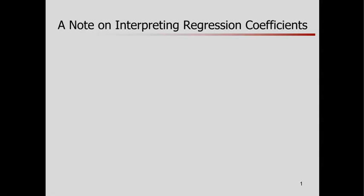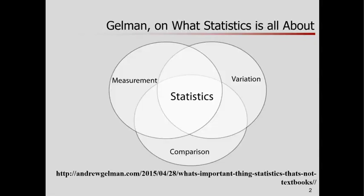Okay, so I just want to spend a little bit of time on this conceptual point of interpretation of the regression coefficients. And a framework I like to think about for a lot of statistics comes from Andy Gelman, who gives us this kind of Venn diagram, and it's like, what is statistics really all about? It's at the intersection of a few different things.